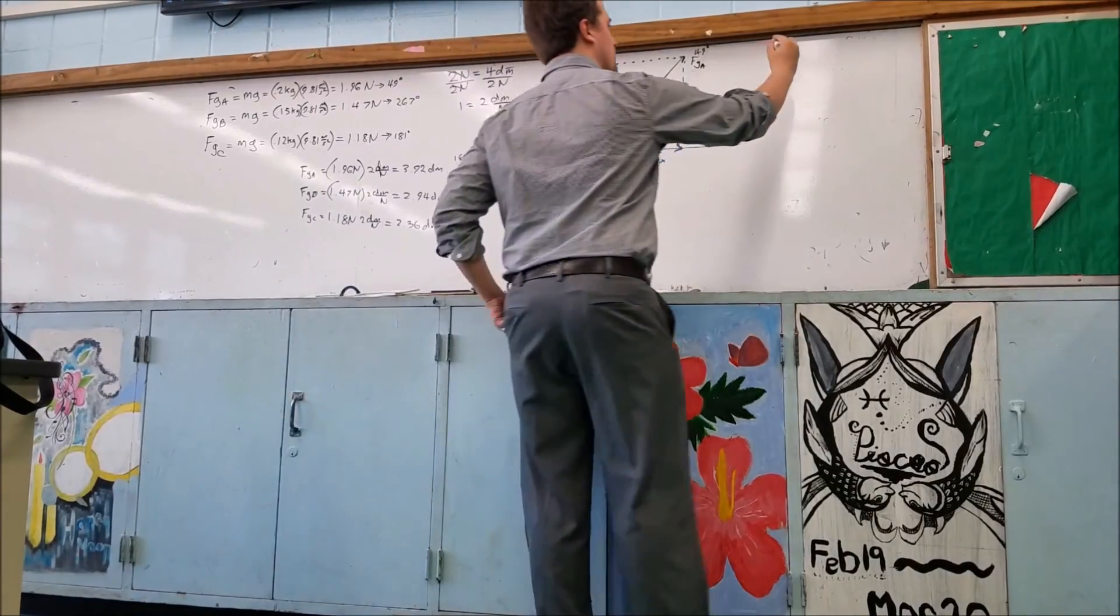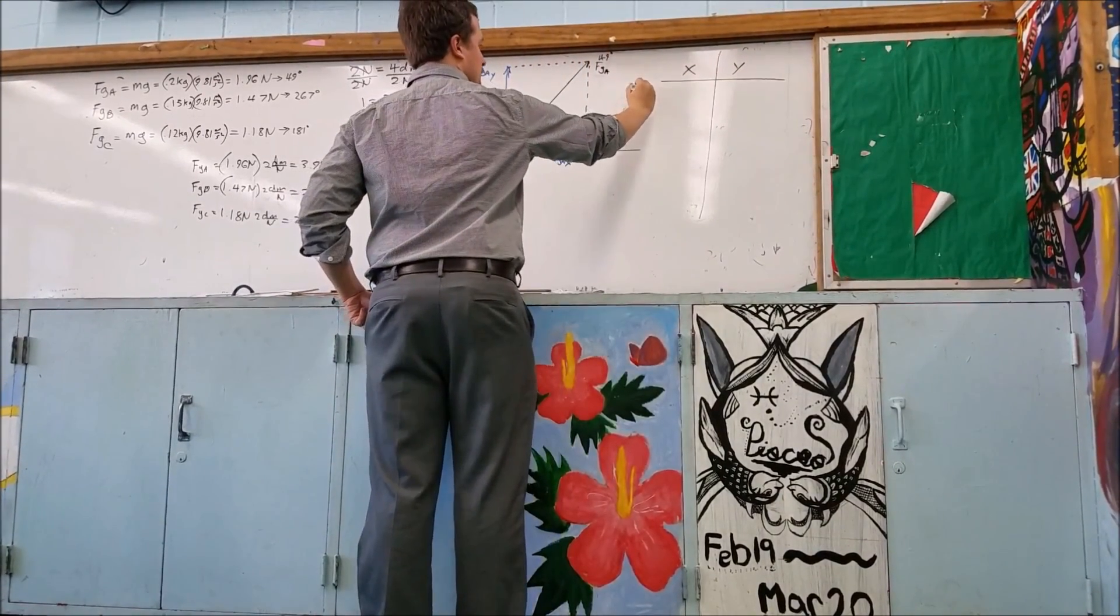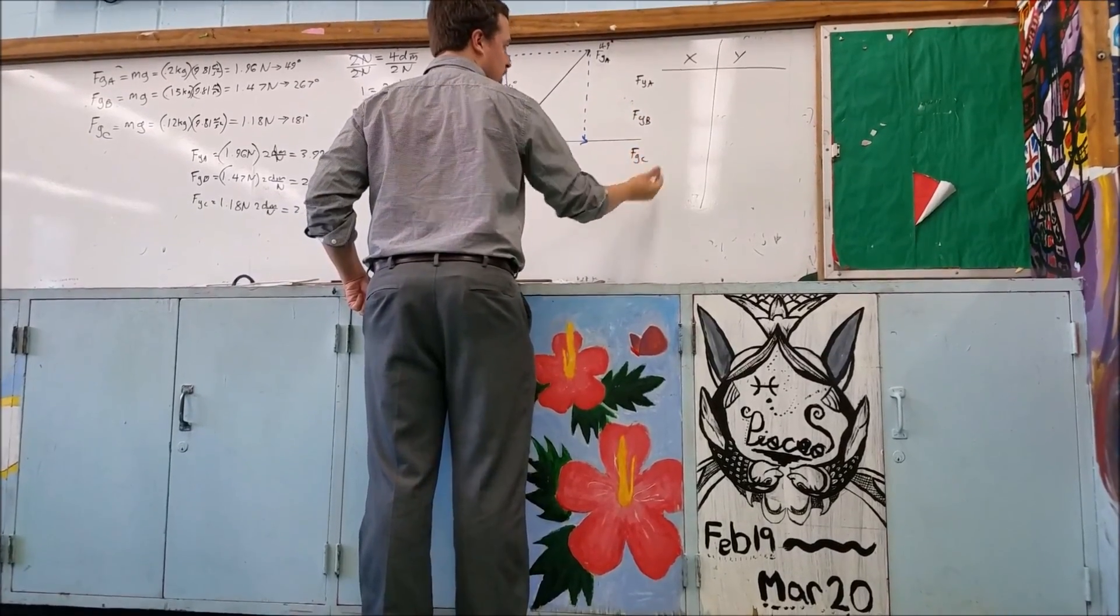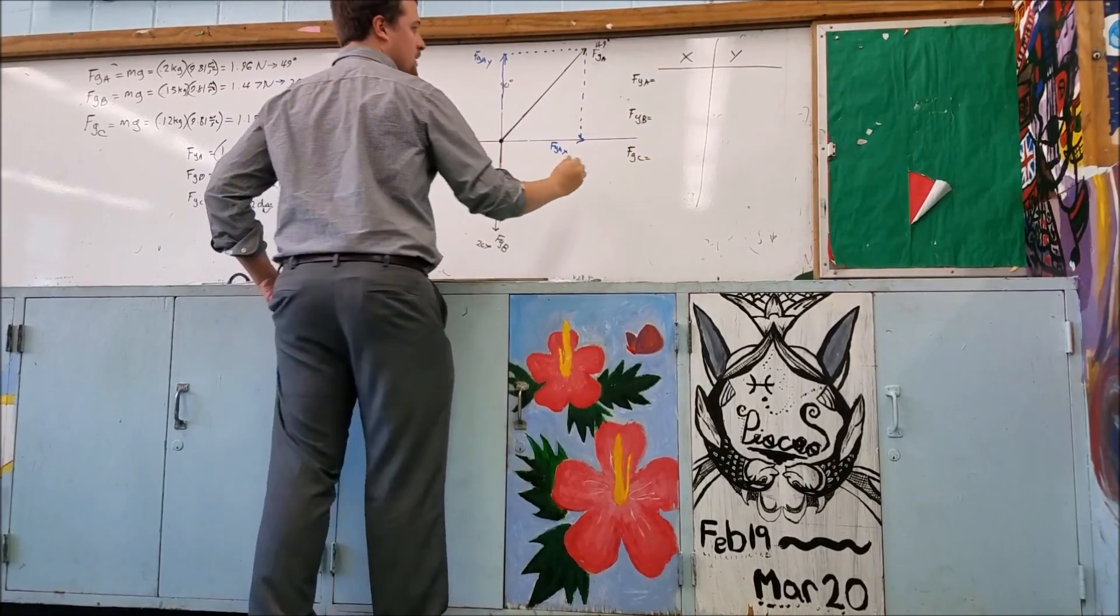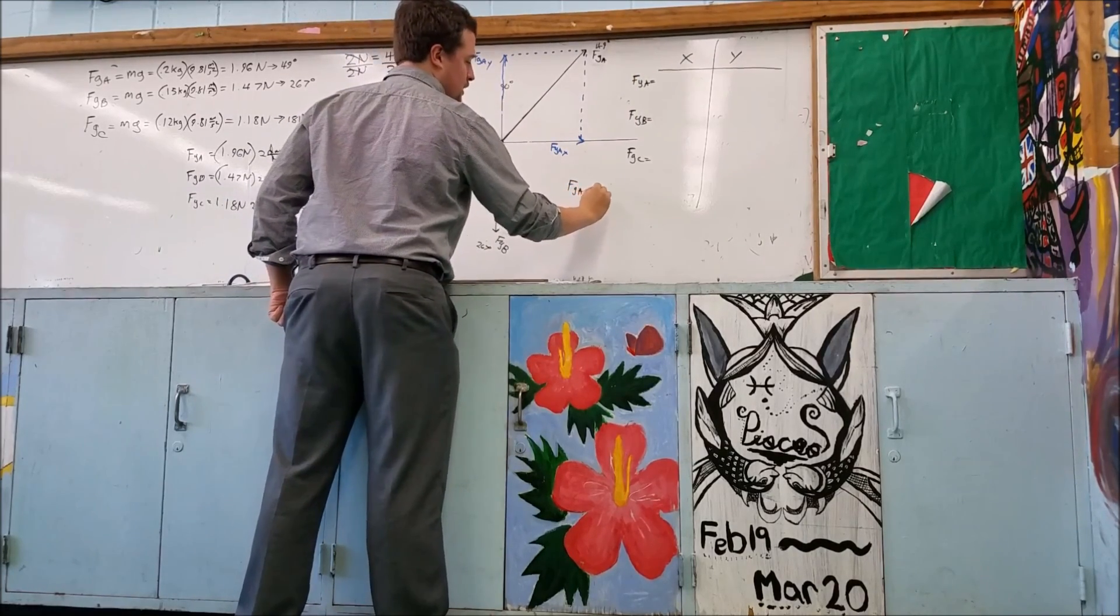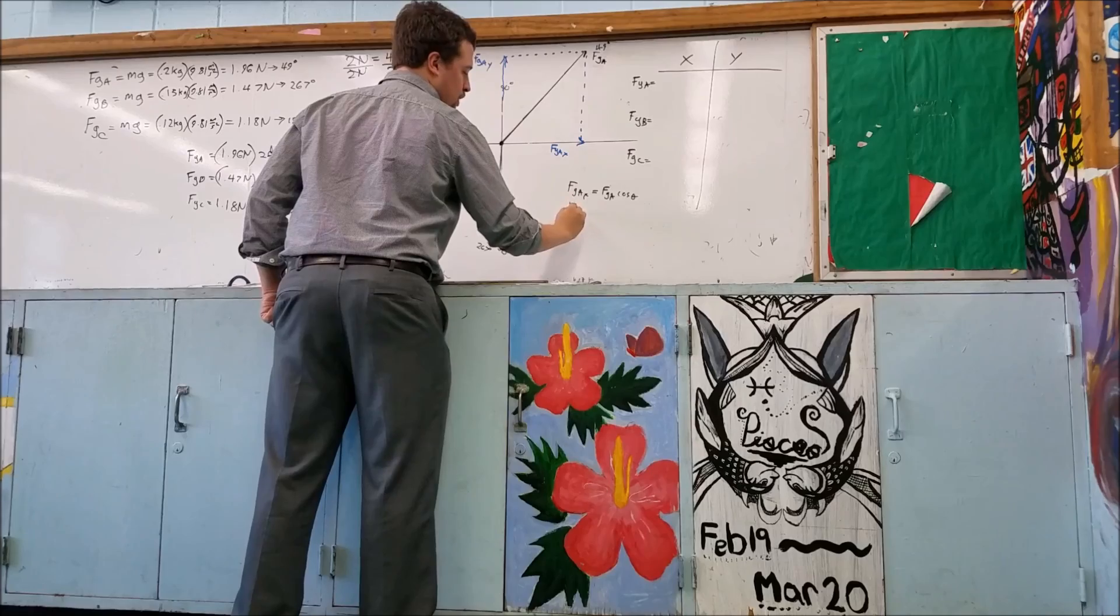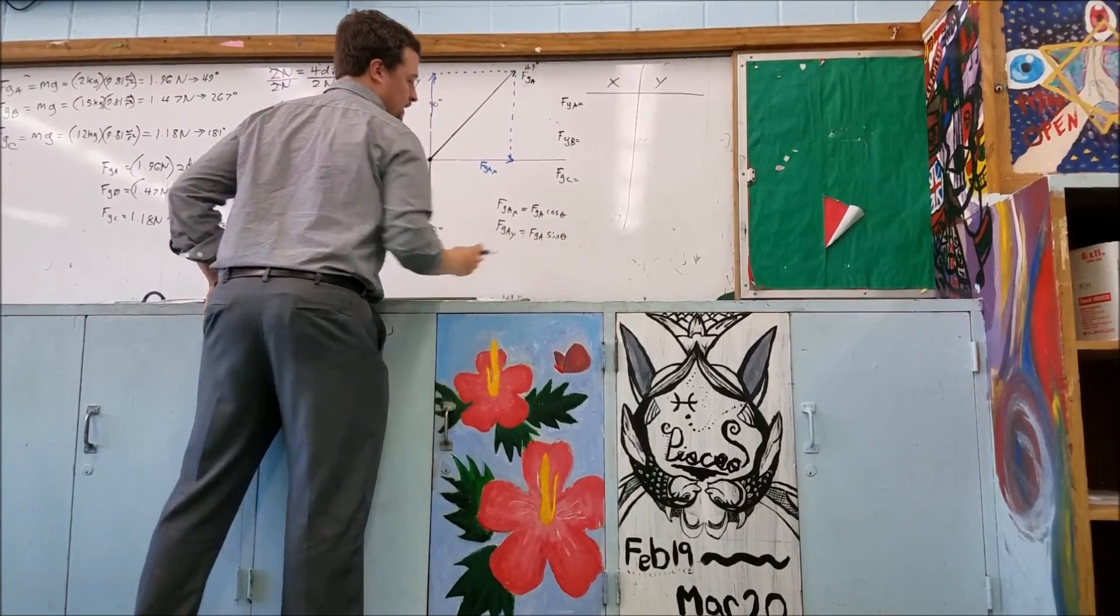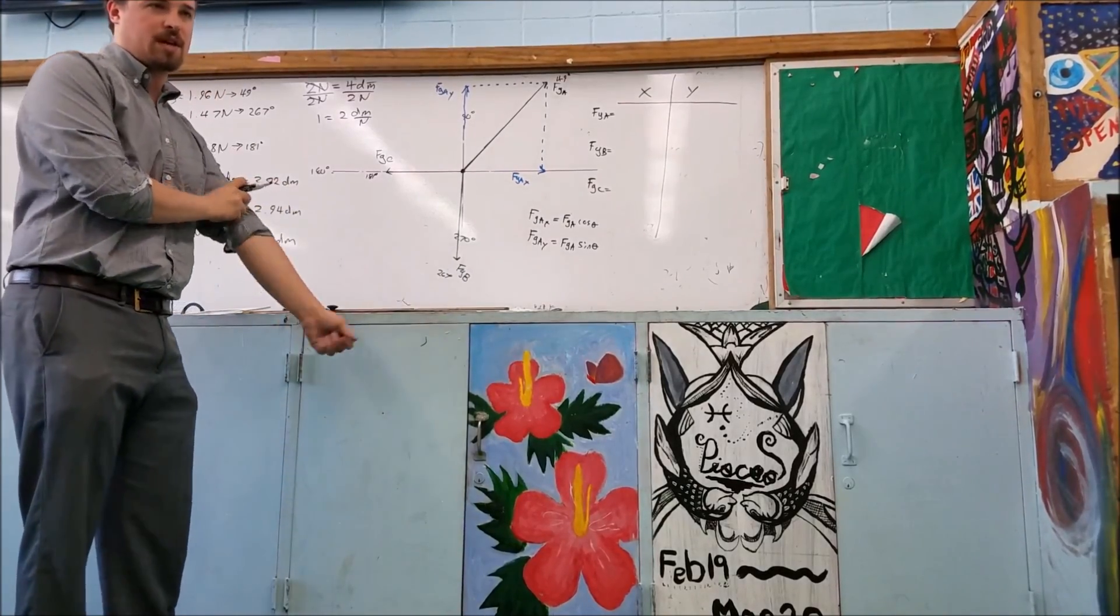So we make a table, x and y components, like such. And then this is going to be FGA, this is going to be FGB, this is going to be FGC. And just so you remember, if you want to find FG, I'm just going to show you down here. So FGAx is equal to FGA times cosine of our angle. And FGAY is going to be equal to FGA times the sine of theta. And remember, this is the same thing as Ax is equal to A cosine theta, Ay is equal to A sine theta. We use that on the reference data.